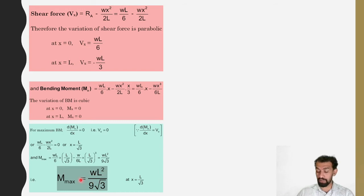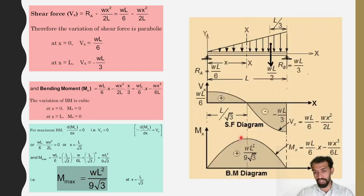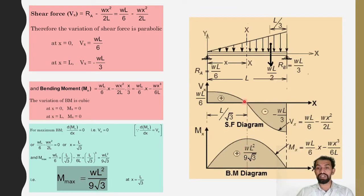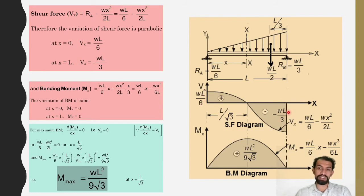This is the maximum bending moment value, occurring at the point where shear force changes direction. The shear force diagram shows W·L by 6 at the left and minus W·L by 3 at the right, and the bending moment maximum is W·L² by 9∛3.